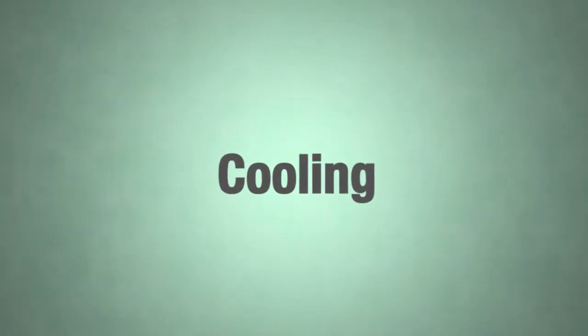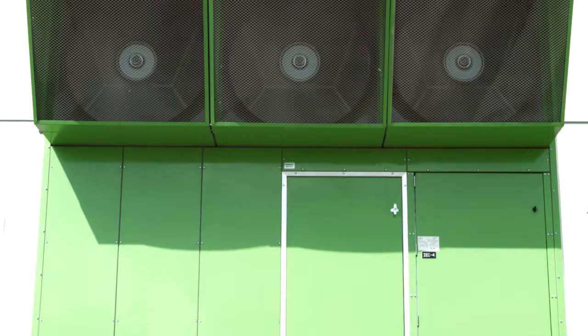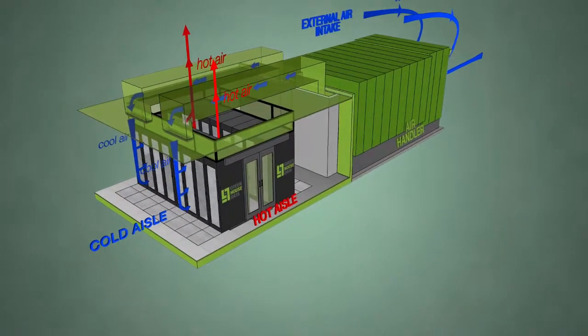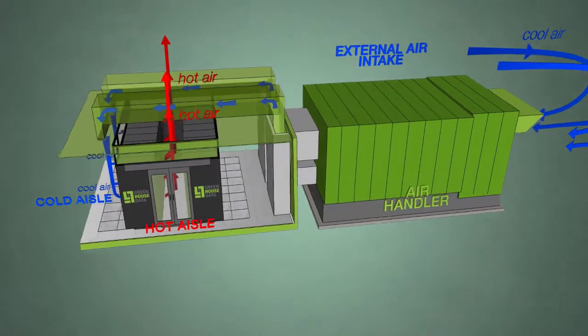We went with an indirect evaporative cooling system because it allowed us to really leverage the outside ambient air here in Cheyenne. Greenhouse Data employs a cold aisle, hot aisle containment system and we use a strong, secure polycarbonate heat containment system combined with an APC insulated door and we're only seeing about 3% bleed out in these pods.